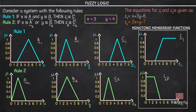The question given here is: consider a system with the following rules. Rule 1 is: if x is a1 and y is b1, then z1 is c1. Rule 2 is: if x is a2 or y is b2, then z2 is c2. We have also been given the values of x and y as 3 and 4 respectively. Apart from this, the equations of z1 and z2 are given as: z1 = x + 3y − 6, and z2 = 2x + y − 7.